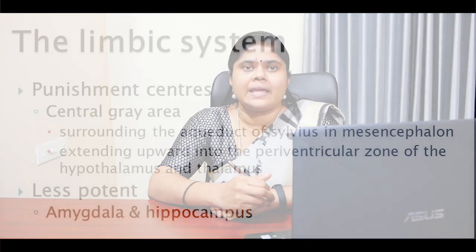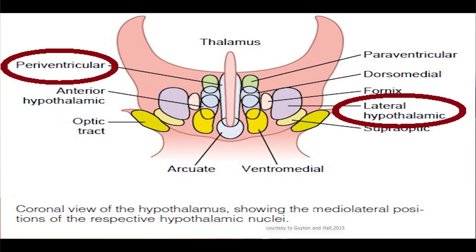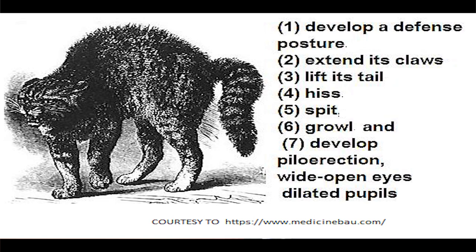The most potent areas for punishment and escape tendencies have been found in the central gray area surrounding the aqueduct of Sylvius in the mesencephalon, extending upward into the periventricular zone of the hypothalamus and thalamus. Less potent punishment areas are found in some locations in the amygdala and hippocampus. Strong stimulation of punishment centers — especially in the periventricular zone of the hypothalamus and in the lateral hypothalamus — causes the animal to develop a defense posture: extending its claws, lifting its tail, hissing, spitting, growling, piloerection, wide open eyes, and dilated pupils. Even the slightest provocation causes an immediate savage attack — a pattern of behavior called rage.